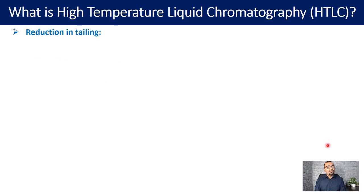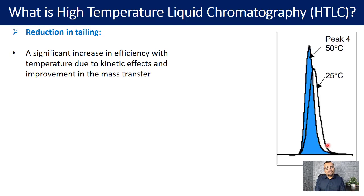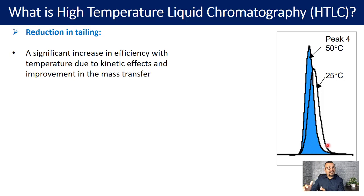The next important point is the reduction in tailing or overall improvement in peak shape. There is a significant increase in efficiency with temperature due to kinetic effects and improvement in mass transfer, which leads to a decrease in peak tailing and improvement in peak shape. In case of secondary silanol effects, those can certainly get minimized with an increase in temperature. So for basic compounds, increasing temperature can be a good idea to reduce peak tailing.